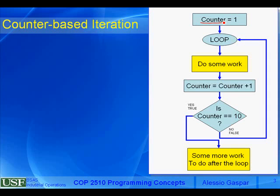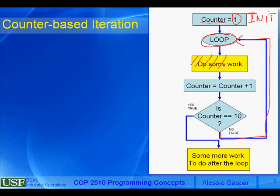In this example, it's relatively easy — we have a single loop. The counter variable is named 'counter.' We start by initializing it to 1. The next step is represented by an oval labeled 'loop' — just a mark in your program that indicates execution can branch back to this point. After this, we have a yellow box labeled 'do some work,' representing what you need repeated in the loop.